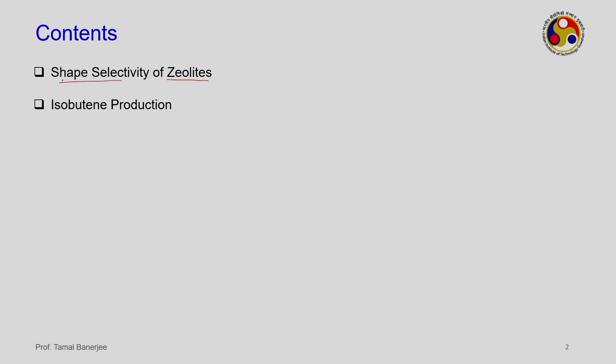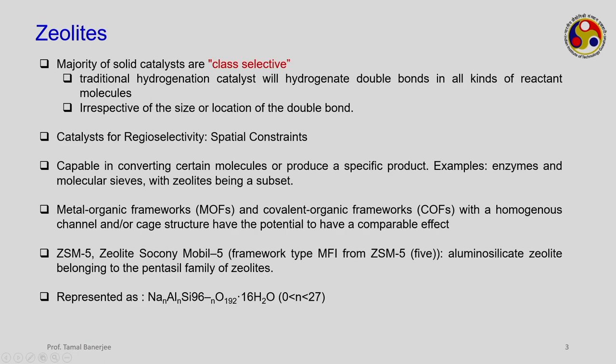Zeolites were initially naturally occurring and are now synthetically synthesized. They have aluminum and silicon cage-like structures — aluminum and silica tetrahedrally bonded with oxygen atoms forming a cage-like structure. Once you have a cage-like structure, you can tune the porosity and pore size, which is where their importance lies. The term 'zeolite' was coined in the 1960s. They are something like molecular sieves — a material with a particular pore size will only allow certain types of molecules to pass through while blocking the remaining ones.